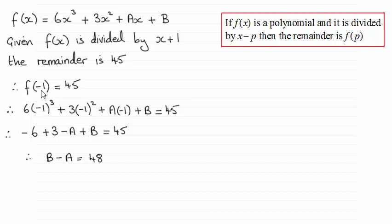So all I've done is substitute minus 1 into here for x and equate it to 45. And that gives me this line here. Working out each of these terms here comes to this line and then all I've done is just rearrange it to give us the required result then b minus a equals 48.